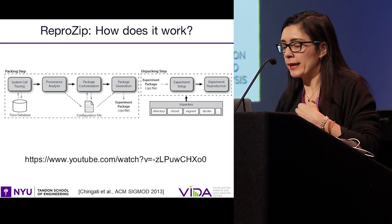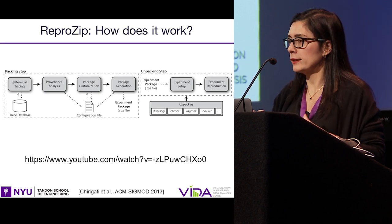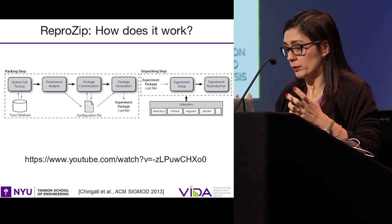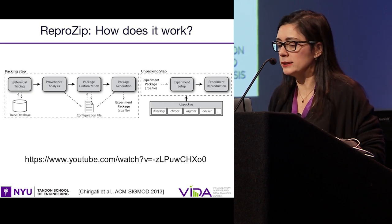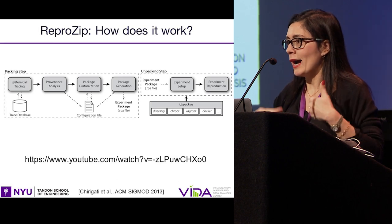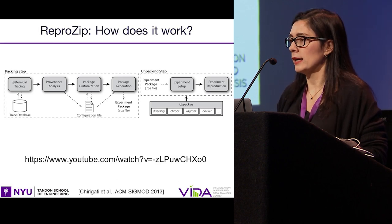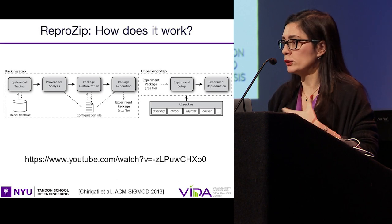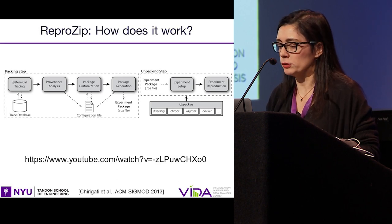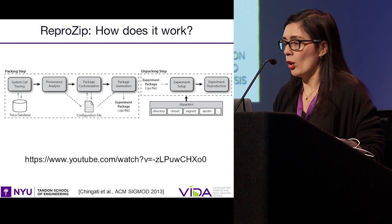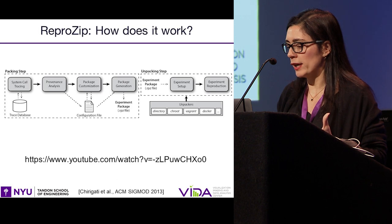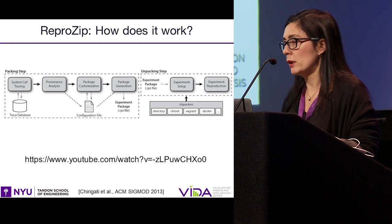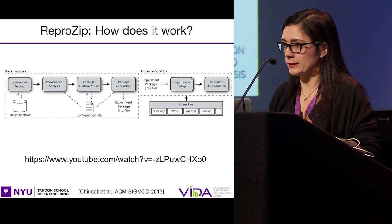In the unpacking step, you get the RPZ file that contains all dependencies, and it will unpack that in many different ways. It can unpack — if you use a compatible operating system — in a directory, or you can use a virtual machine such as Vagrant, Docker, and many other packers. And this is one point where the system is extensible — you can create unpackers for different kinds of environments.